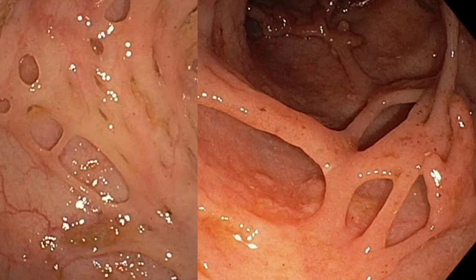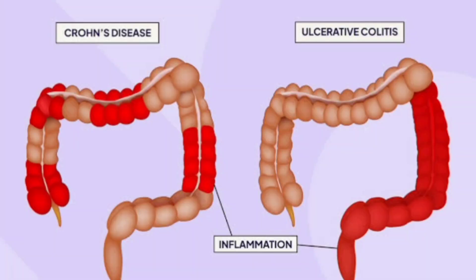The pseudopolyps fuse with each other, forming mucosal bridges. Ulcerative colitis is also known as toxic megacolon — this is an important alternate name to remember.